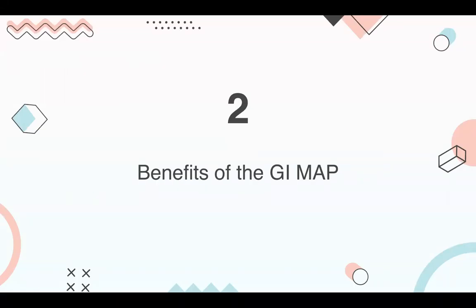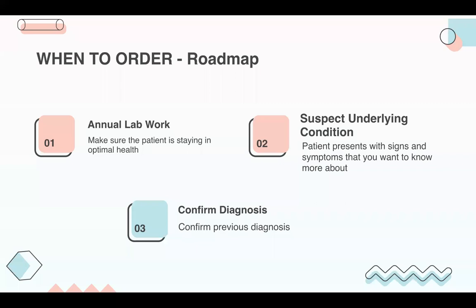When should you order the GI Map? There are a number of reasons, including for annual lab work. From a functional medicine standpoint, it's great to check on patients from a three-month, six-month, or twelve-month standpoint. Another great reason is if you're suspecting an underlying condition — maybe the patient presents with signs and symptoms you want to dig deeper into, or maybe you have a previous GI Map and want to confirm a suspected diagnosis. The GI Map can give you actionable results in those situations.